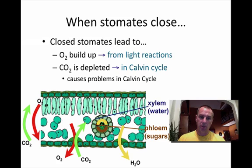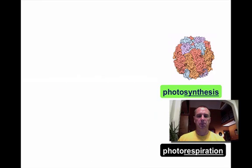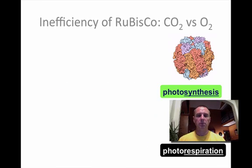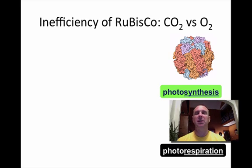But when you close the stomata, what happens is you eliminate water leaving and entering the plant, and you also eliminate the exchange of carbon dioxide and oxygen. This could present a problem. Just remember why plants have to keep their stomata open.